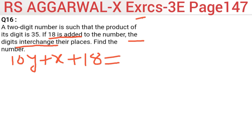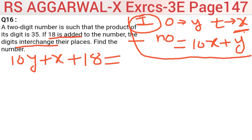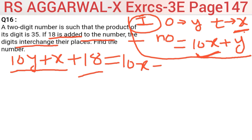After interchange, the ones digit becomes y and the tens digit becomes x. So the number after interchanging will be 10x + y. The question says: if 18 is added to the original number 10y + x, the digits interchange, meaning it equals the interchanged number 10x + y.